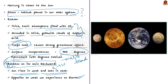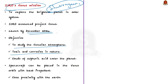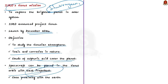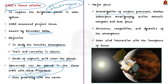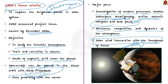Having seen the basics, let us see facts about ISRO's Venus mission, called Shukrayaan-1. To explore the brightest planet in the solar system, ISRO has announced Project Venus, scheduled for launch by December 2024. The mission's objective will be to study the Venusian atmosphere, which is toxic and corrosive as clouds of sulfuric acid cover the planet. The spacecraft can be placed in the orbit of Venus with least propellant due to its close proximity with the Earth. The Venus mission will focus on surface processes, shallow subsurface stratigraphy, active volcanic hotspots and lava flows, the structure, composition and dynamics of the atmosphere, and solar wind interaction with the ionosphere of Venus.